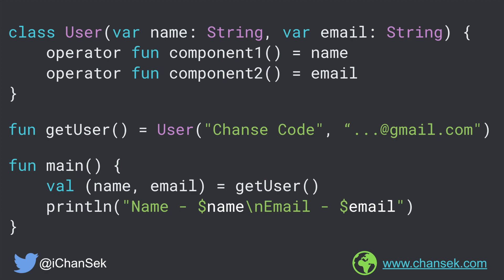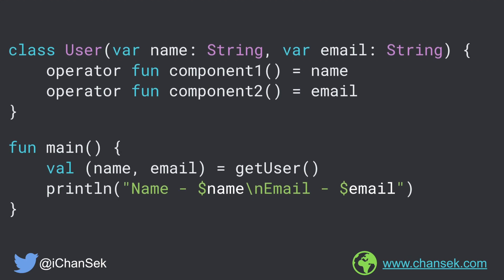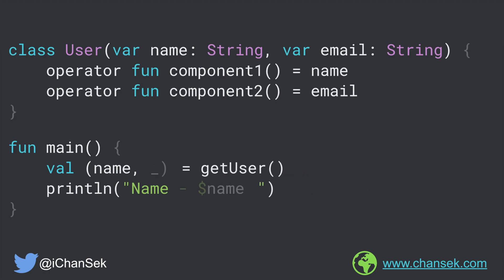Now we might ask: what if we need only a few values from a function? For example, what if we need only name or only email? We can definitely achieve that. Let's say we need only name from the User object. In that case, we can have an underscore in place of the second value inside the parentheses. By putting an underscore in place of unused values, we achieve some level of performance, because this tells the Kotlin compiler not to call the component2 function.